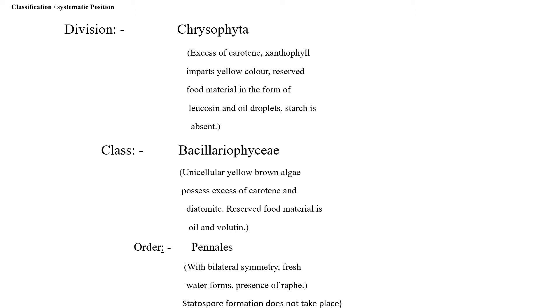Class: Bacillariophyceae. Unicellular yellow-brown algae, possesses excess of carotene and diatomite. Reserved food material is oil and volutin.